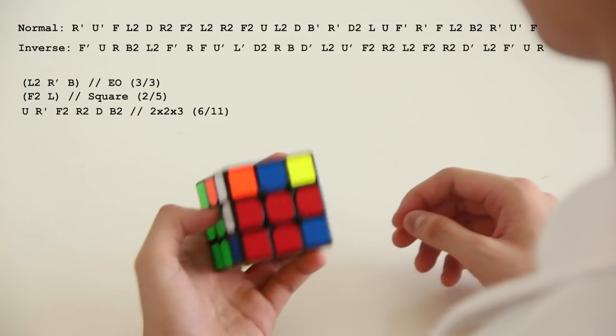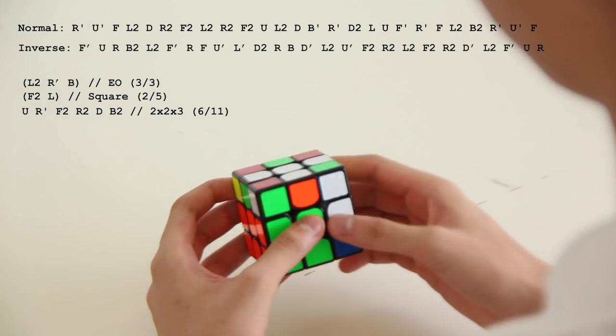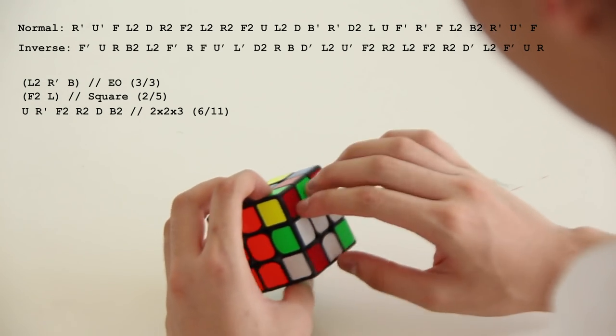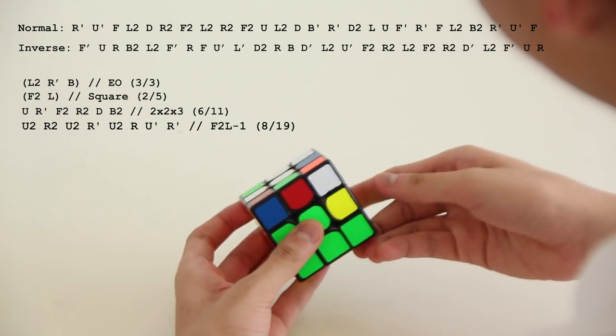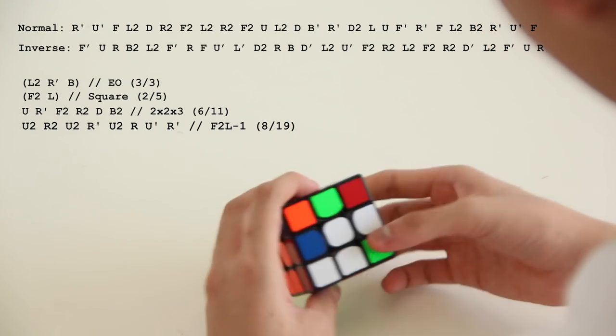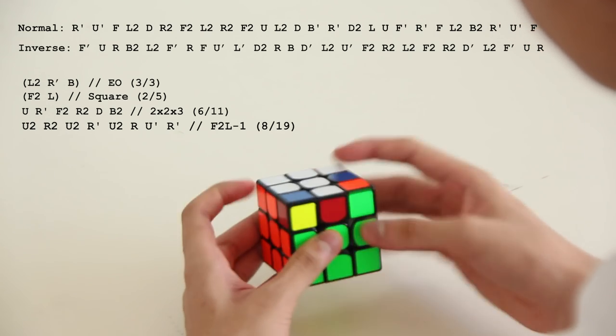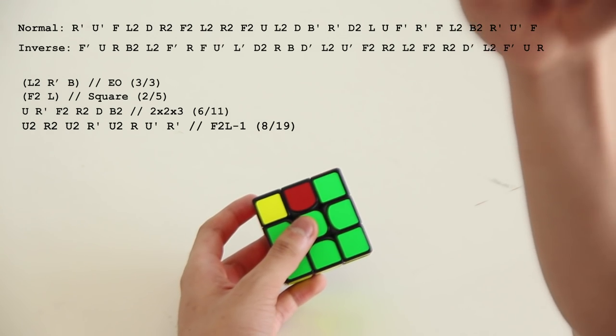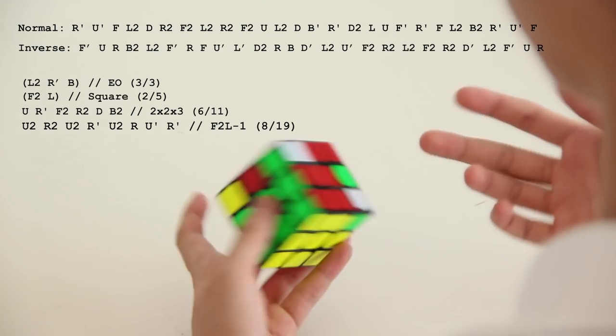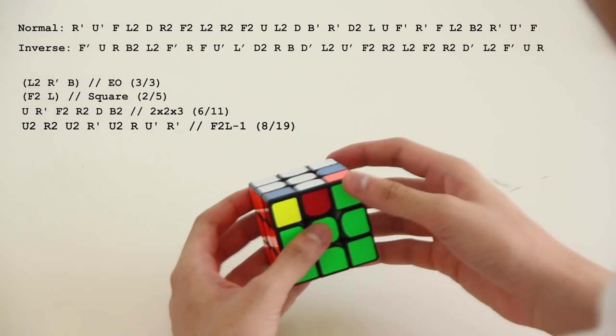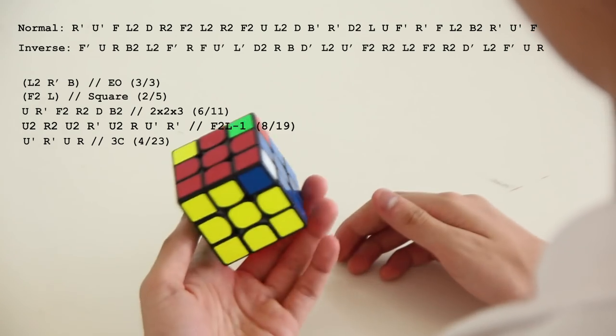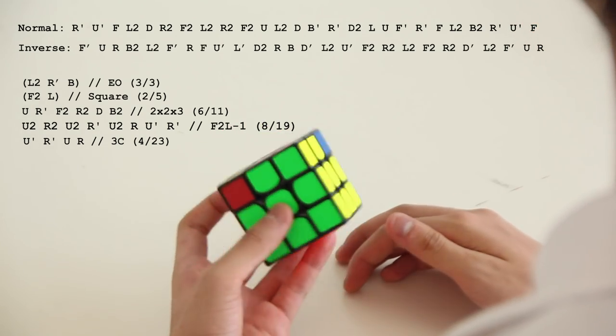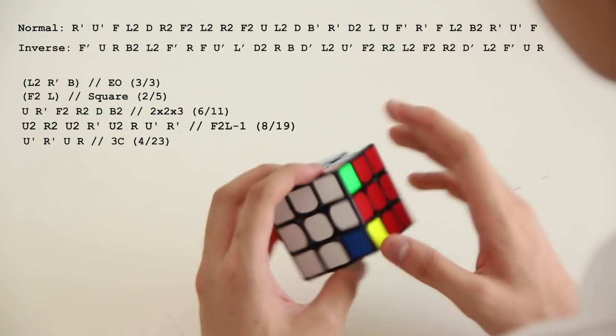So from this point I did a really inefficient F12 pair. So I basically just solved this pair like normal, U2, R2, pair them up, then insert it. So that's 19 to F12 minus 1, but the continuation is what matters. So I just inserted this edge, U', R', U, R, and that is 3C in 23 moves, which is not too bad.